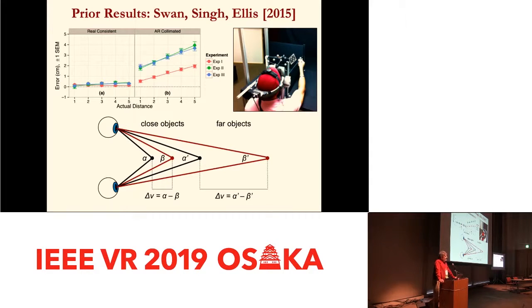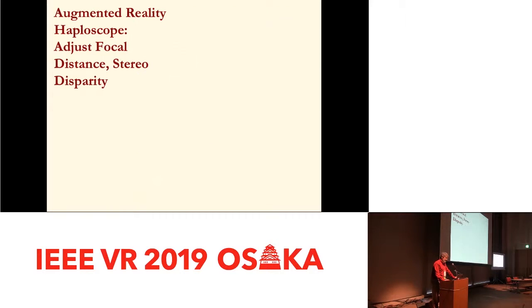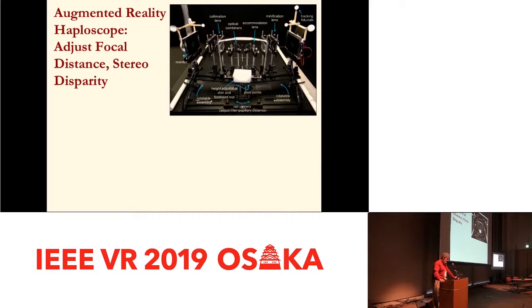We could not test this hypothesis on the NVIS display because the focal distance was fixed and unadjustable. At the time, there was no commercially available off-the-shelf display that allowed the focal distance to be modified, and that is still true today. Therefore — and I guess this is why this paper is in this session — we built our own display.